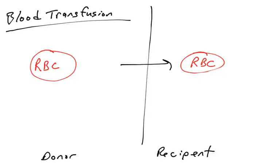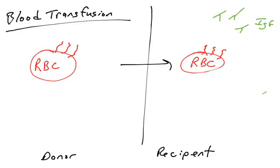This could happen if the recipient's immune system recognizes the red blood cells as non-self. That would be a bad thing if the recipient made antibodies that recognized molecules on the surface of red blood cells as non-self and attacked them. There are indeed many molecules on the surface of red blood cells, and we're going to talk about the blood group antigens in this video.